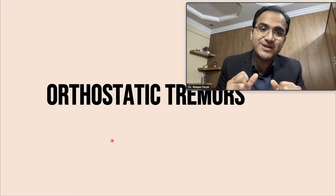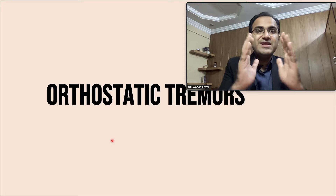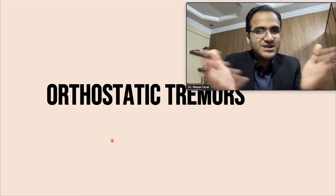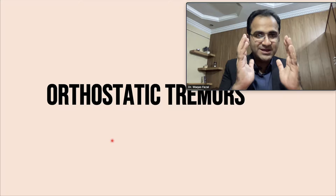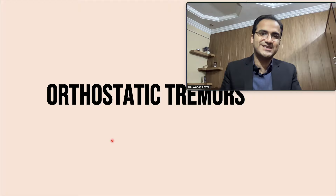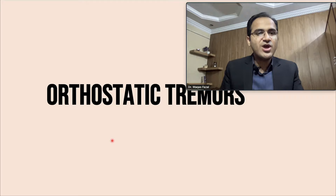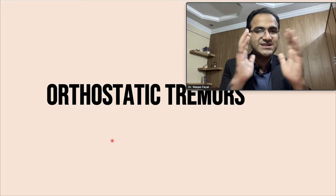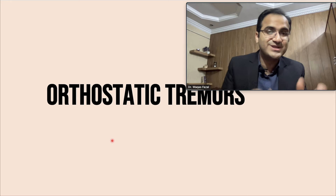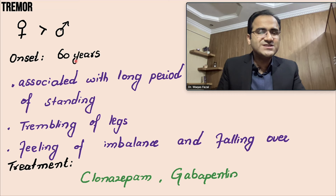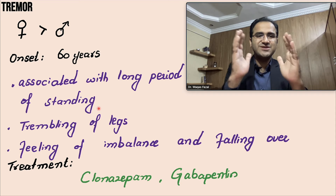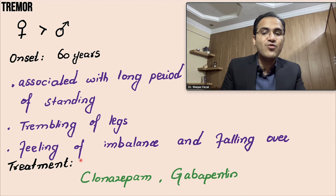Coming to orthostatic tremor — this is a tremor associated with a certain position. An older person standing for a longer period of time develops trembling in the legs, but when the patient starts walking, the tremor goes away. When they stop and stand still for some time, the trembling returns. The patient has a subjective feeling of being about to fall. It is more common in females, with onset around 60 years, and is associated with long periods of standing.